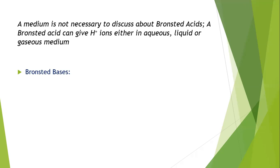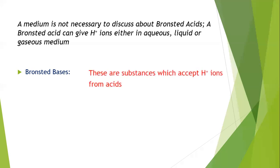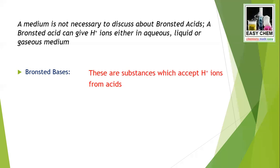When it comes to Brønsted acids, the opposite term is Brønsted base. If Brønsted acids give hydrogen ions, the opposite — Brønsted bases — are substances which accept H⁺ ions from acids. So, Brønsted acids release hydrogen ions, and Brønsted bases accept hydrogen ions.